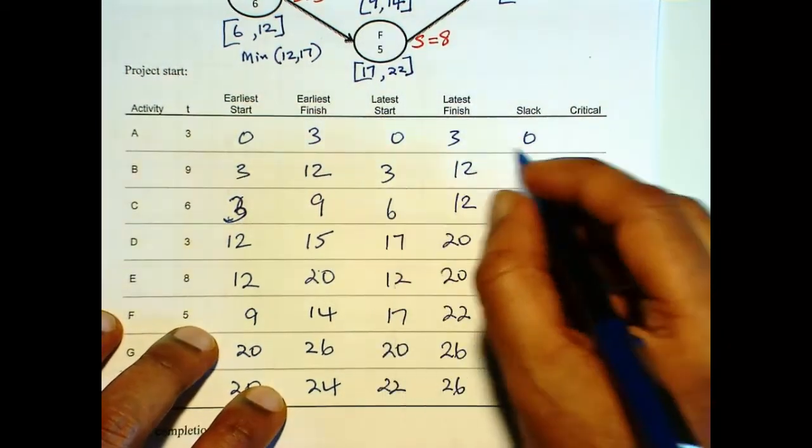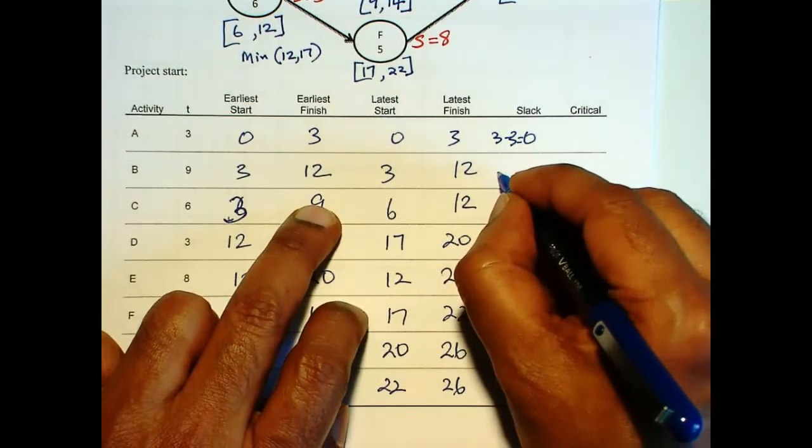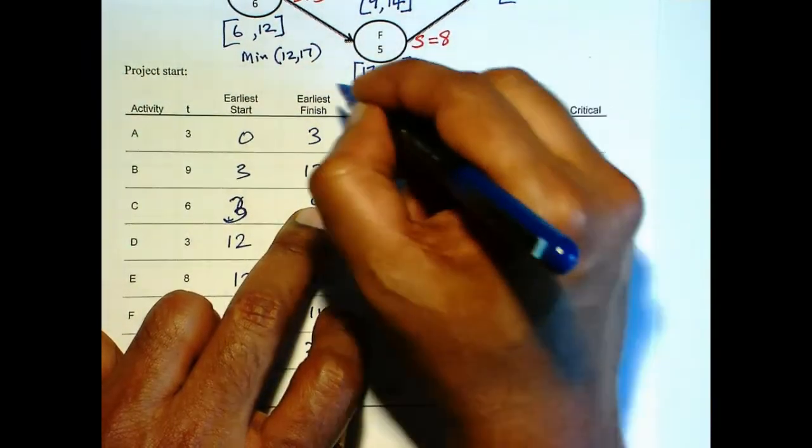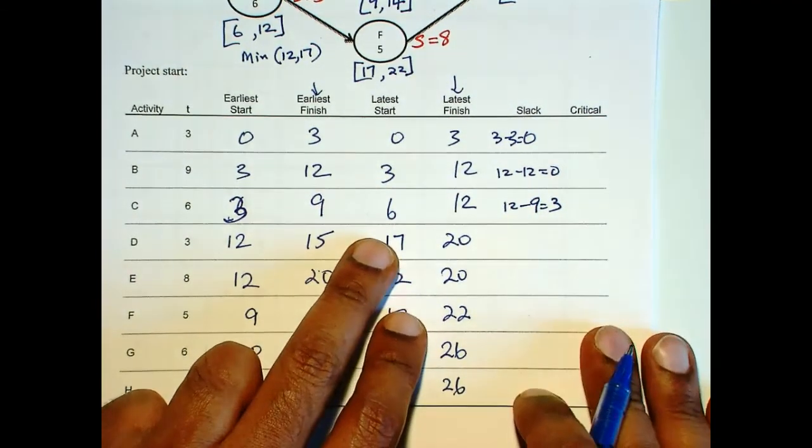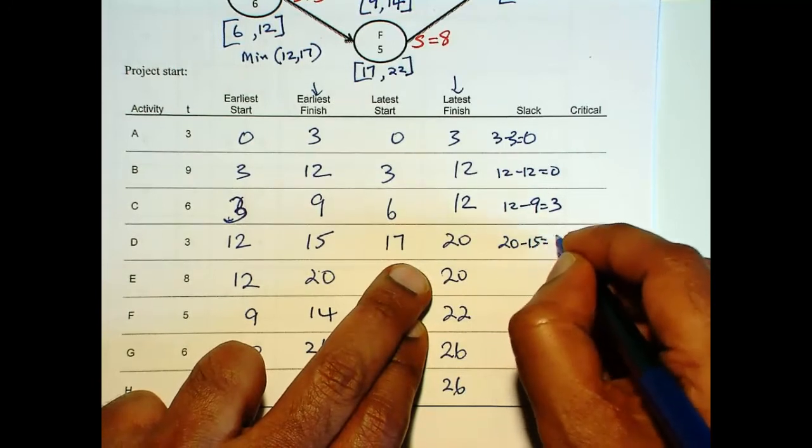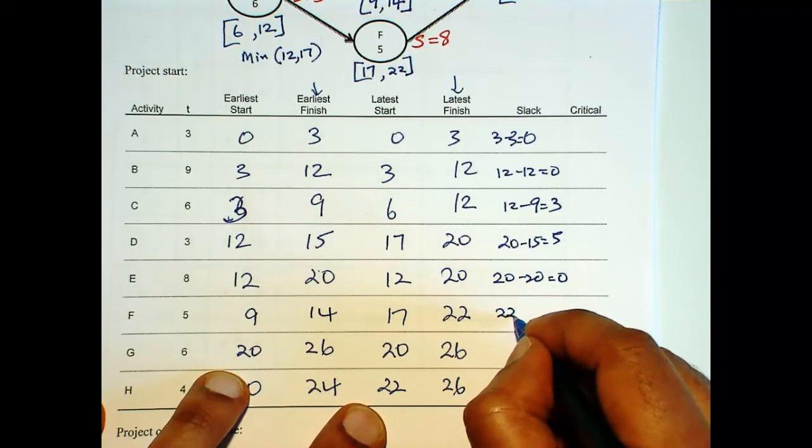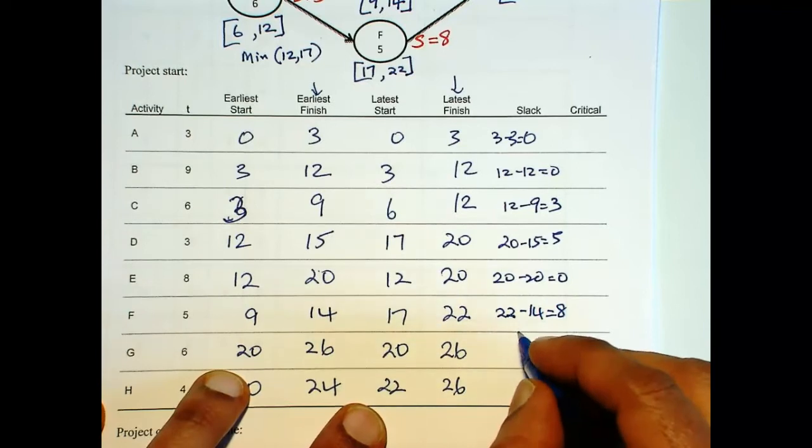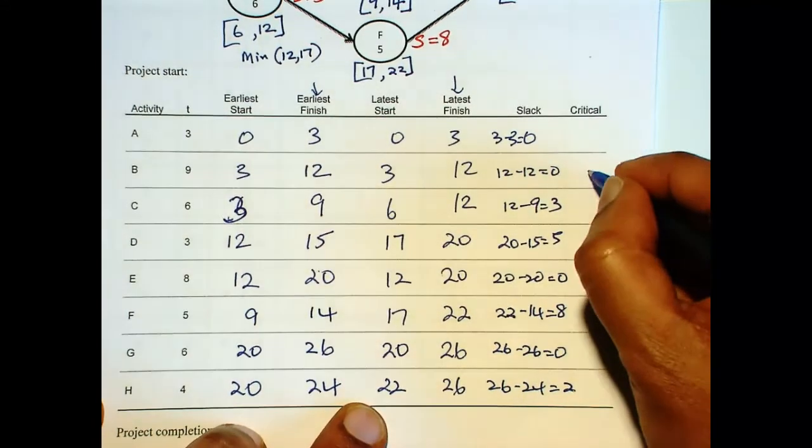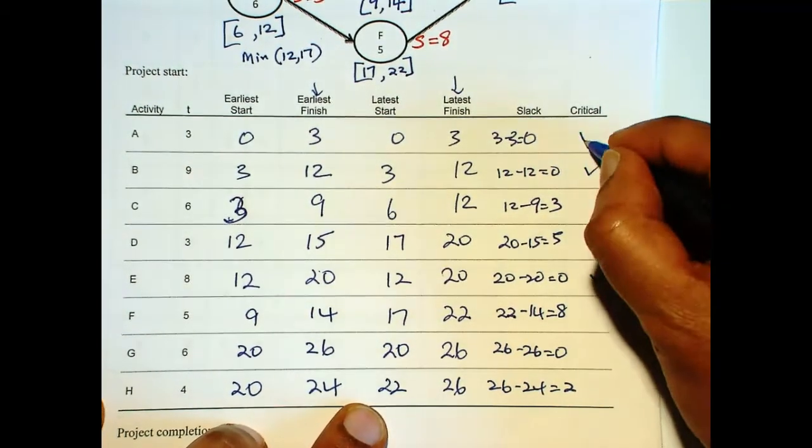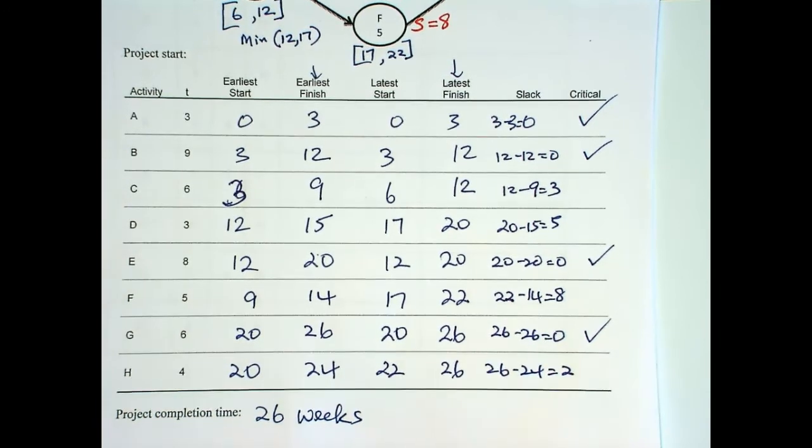So slack is 0, that is 3 minus 3 is 0. 12 minus 12 is 0, so I'm using these two. And then 12 minus 9 is 3. 20 minus 15 is 5. 20 minus 20 is 0. 22 minus 14 is 8. 26 minus 26 is 0, 26 minus 24 is 2. So this is critical, this is critical, these four are critical. So project completion time is 26 weeks.